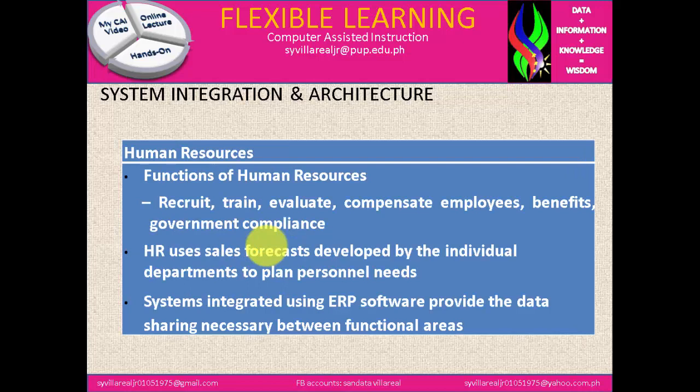Under human resources, the functions of HR include recruit, train, evaluate, compensate employees, benefits, and government compliance. HR uses sales forecasts developed by individual departments to plan personal needs. ERP software provides the data sharing necessary between functional areas, and HR needs information from the other departments.